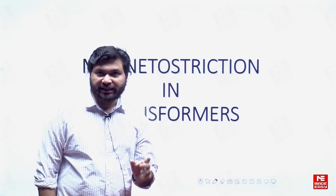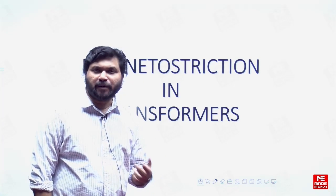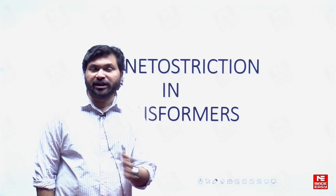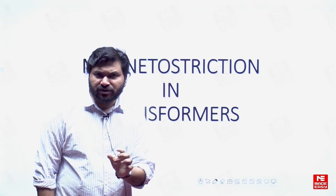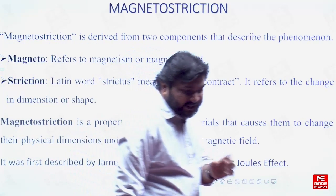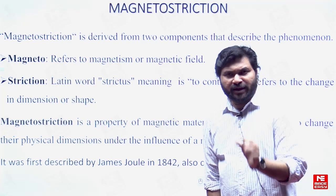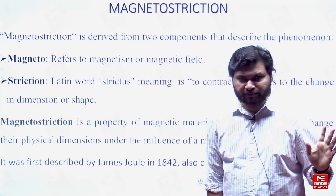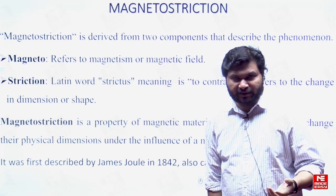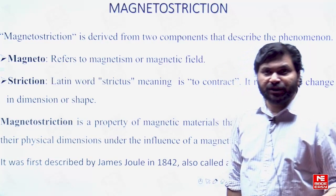This word magnetostriction contains two terms. One is magneto, the other is striction. As the name implies, magneto refers to magnetism or magnetic field. This word striction is originated from Latin, meaning to contract. It refers to the change in physical dimension — contract or expand — shape, size, or length. So finally, magnetostriction means it is the property of a magnetic material to change its physical dimension, whether size, length, or shape, when it is subjected to a magnetic field.